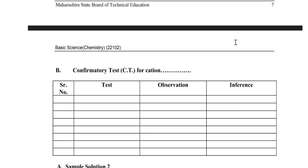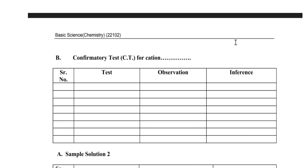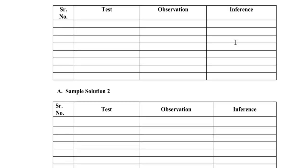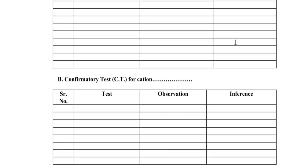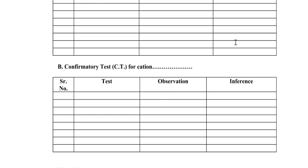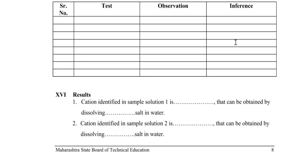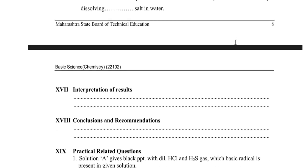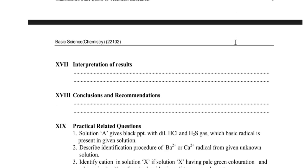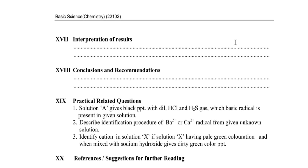If positive, take the confirmatory test (CT) for that cation. Similarly, for the second solution, write down the test, then observation and inference, then take the confirmatory test for positive observation, then write down the result, interpretation of result, conclusion, and recommendation. There are also some practical-related questions.